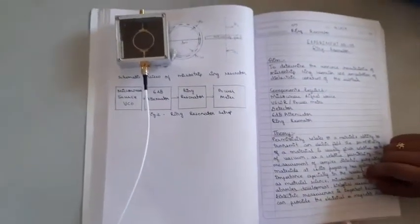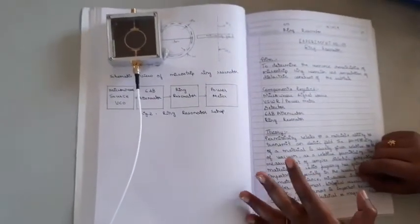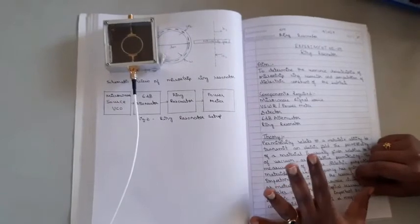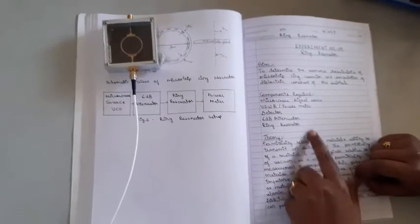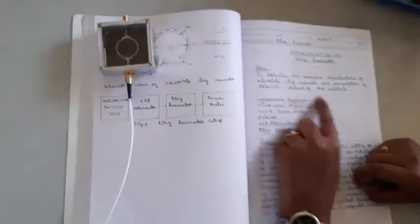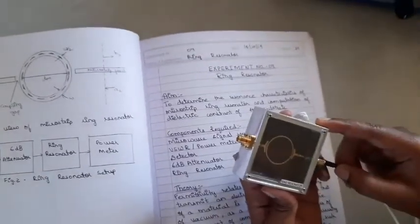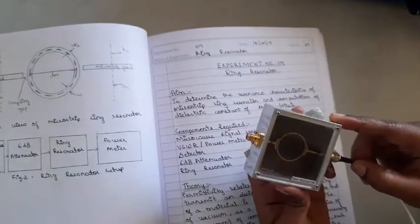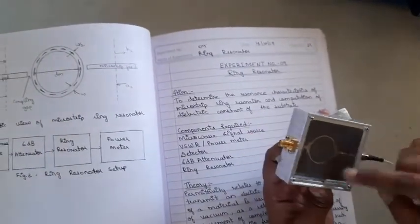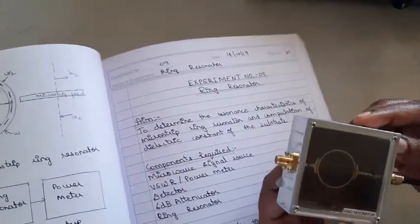What we are supposed to find is the resonant frequency. The resonant frequency is required in this experiment in order to find the dielectric constant of a substrate material. You can see this is a microstrip ring resonator device. It is named microstrip because it operates using microwave signals, and this ring resonator is made up of substrate material — that is duroid material.